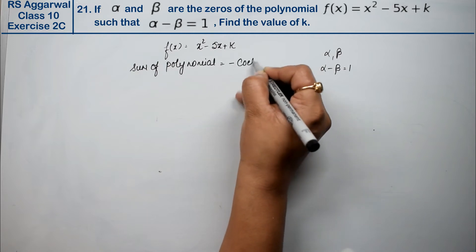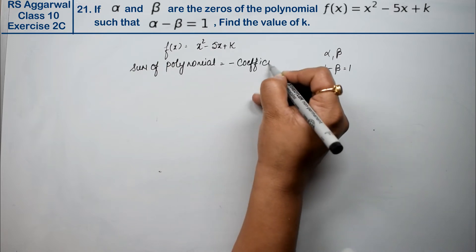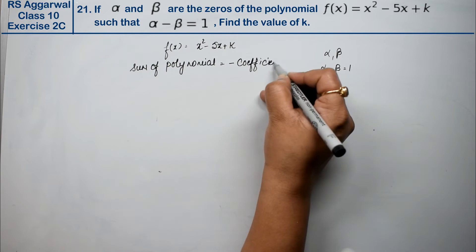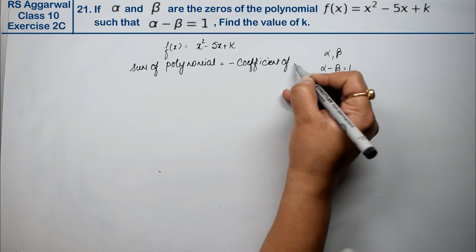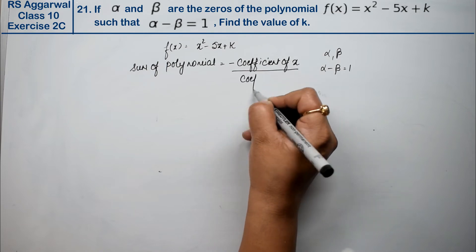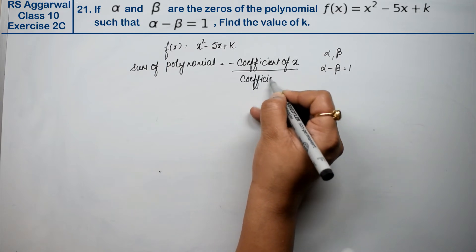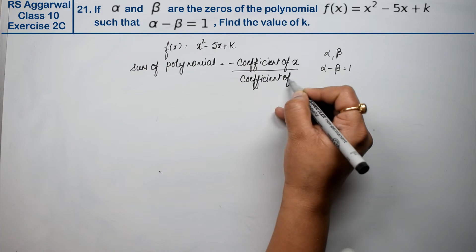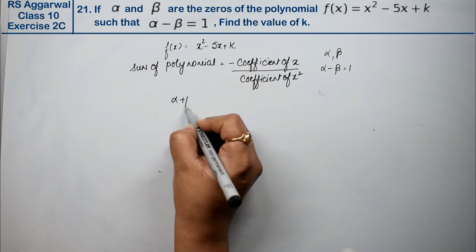We'll use that formula for α and β. So α + β equals minus coefficient of x upon coefficient of x², which gives us α + β = 5.